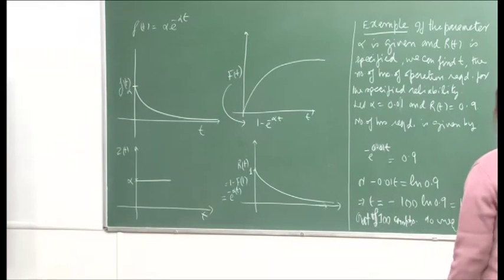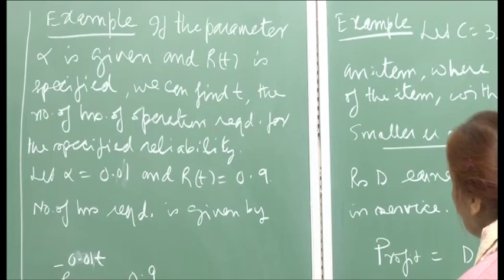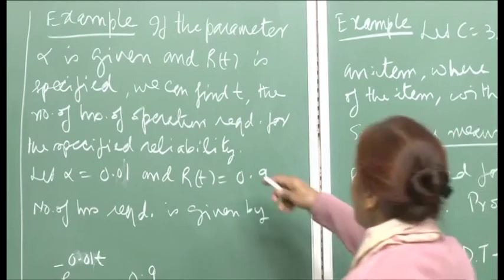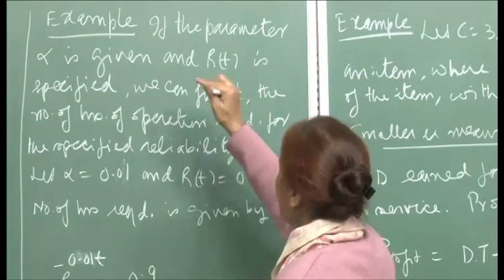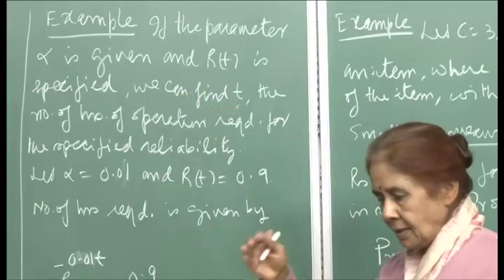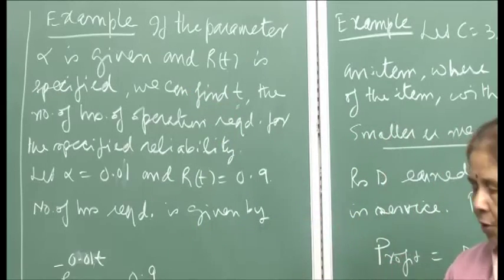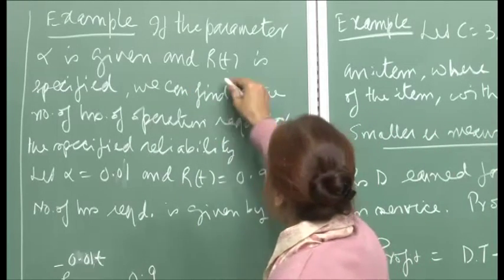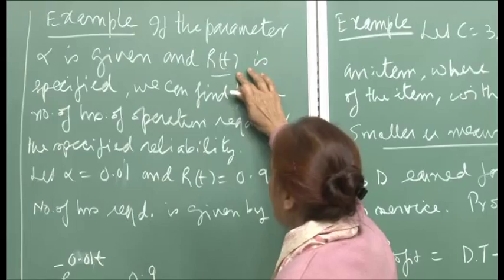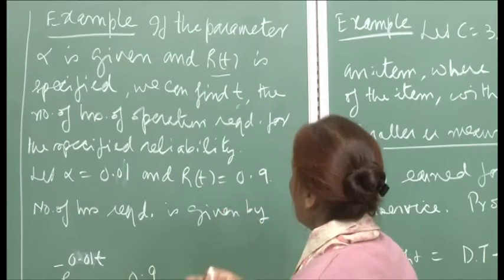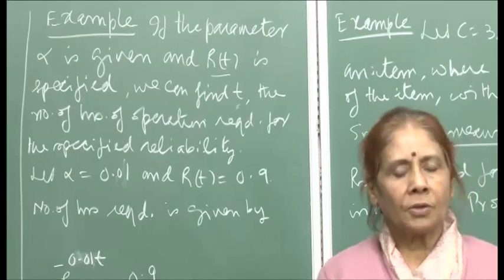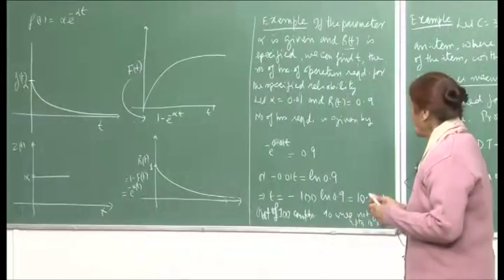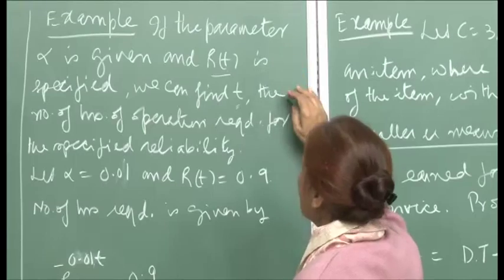Let us look at this example. If the parameter α is given and the reliability R(t) is also specified, we can find t. Given α, you have specified the failure law. You are asking for a certain level of reliability — what would be the number of hours of operation required to achieve that specified reliability level?